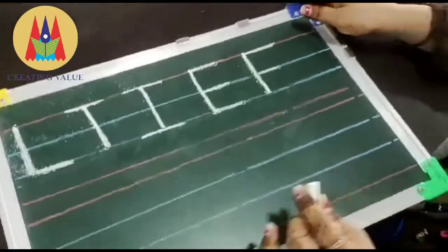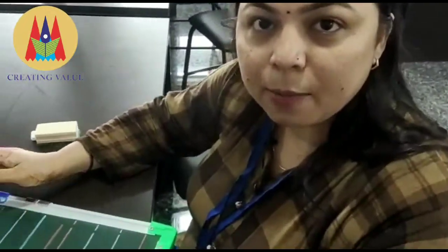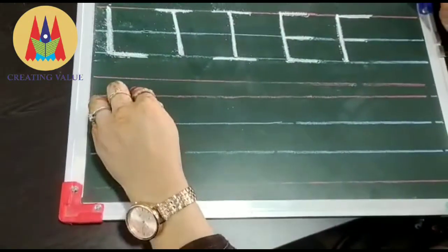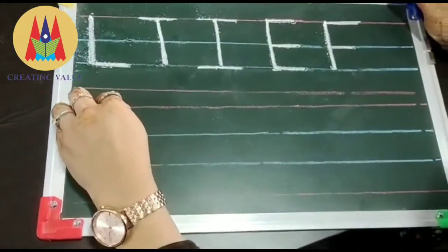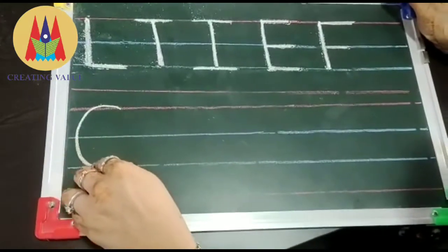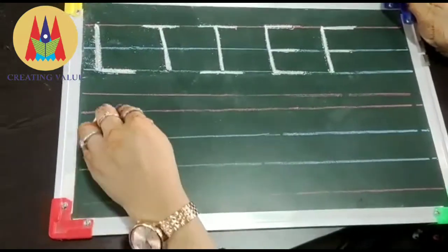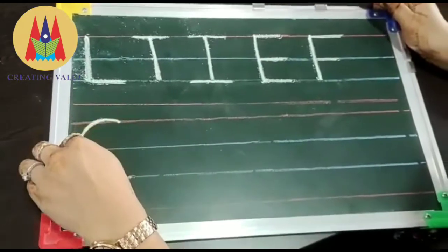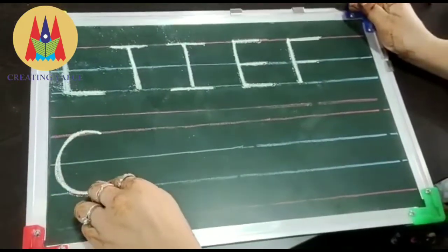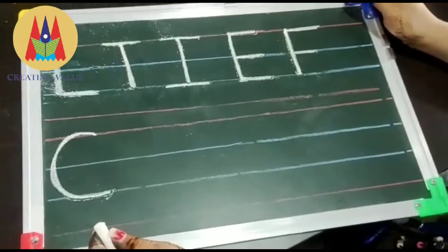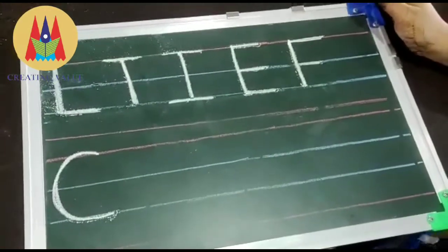Now the next alphabet we can write with the help of a curve. Red to blue — letter C here. You can see, this is a curve. Letter C. C for cup, C for cat and C for cake.